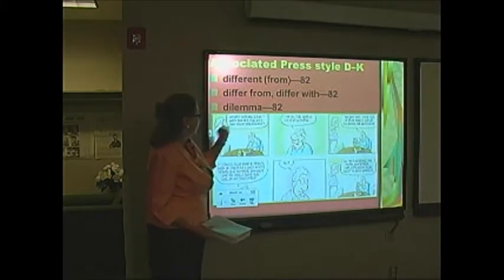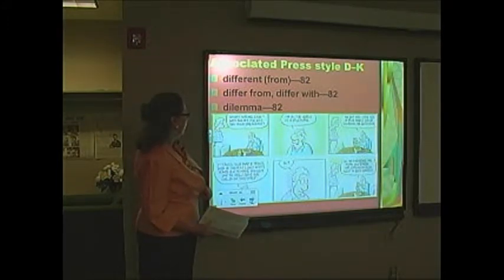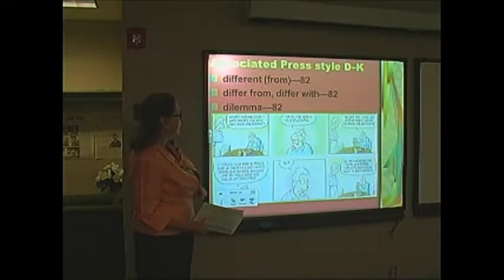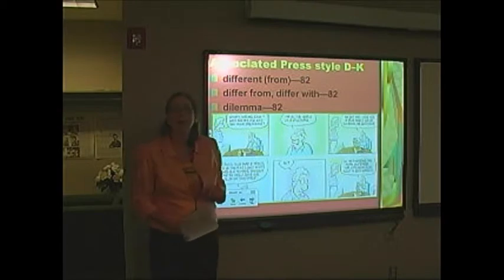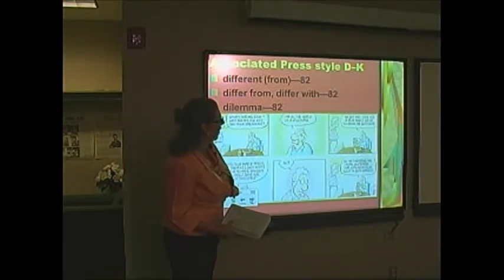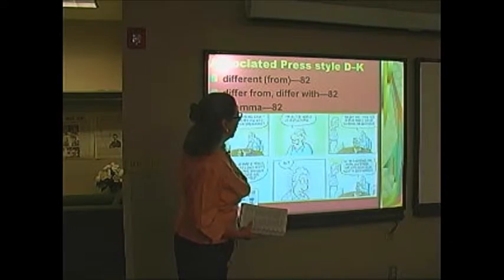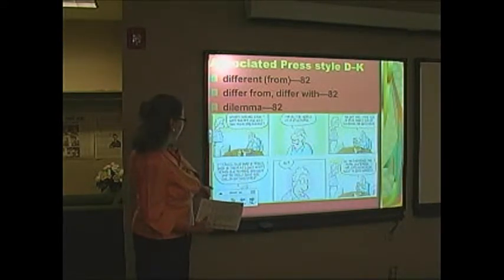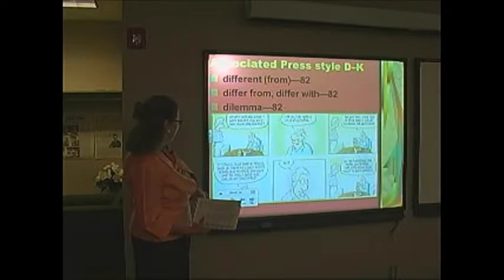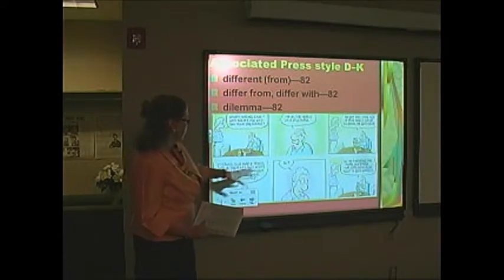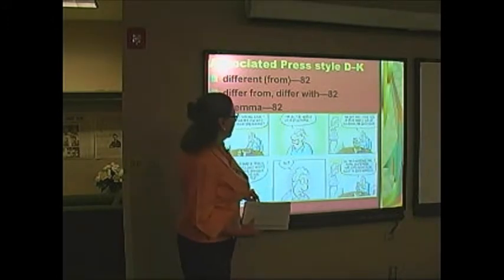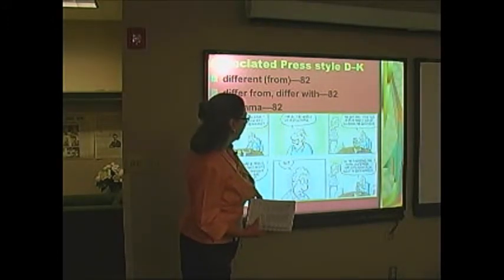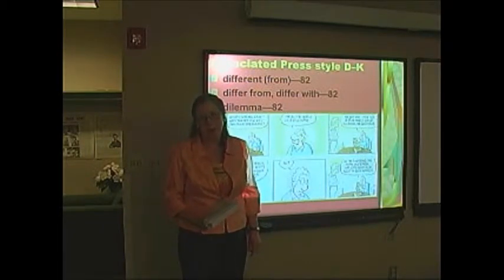The cartoon illustrates the point: a character says he's on the horns of a dilemma — he has a jug of pure maple syrup that takes four maple trees, each at least 40 years old, to make enough sap to yield just one gallon. He says he's pondering the moral and ethical implications of pouring it on Eggo waffles.